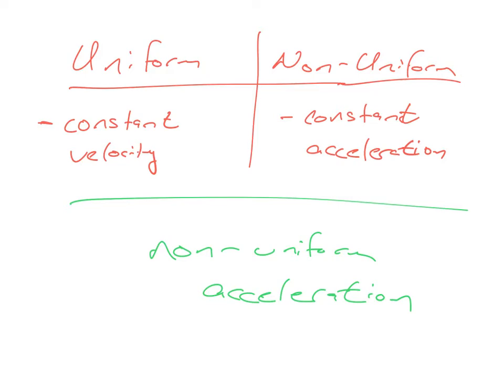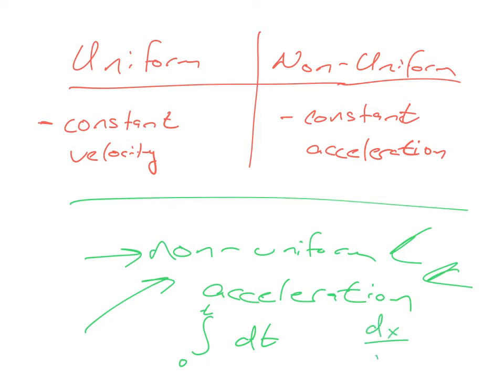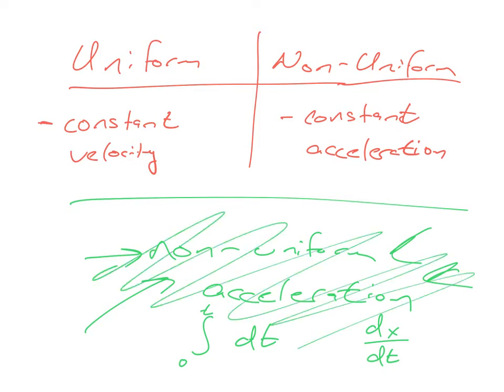If you take calc-based physics, you're going to integrate things from zero to t with respect to dt, or you're going to take a derivative dx over dt. Some of you don't have any idea what I'm talking about, and that's totally fine because this is algebra-based physics. So outside of uniform circular motion, we're not going to worry about this at all. Let's jump into our first case, which would be uniform motion.